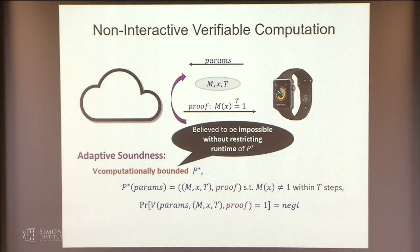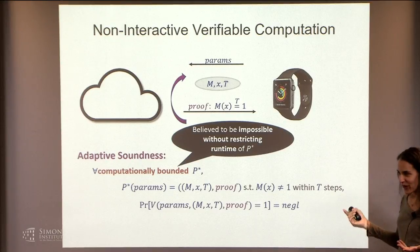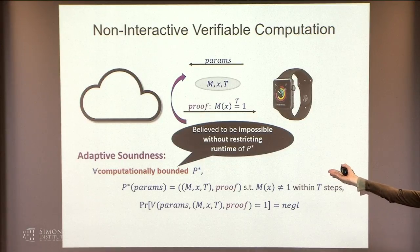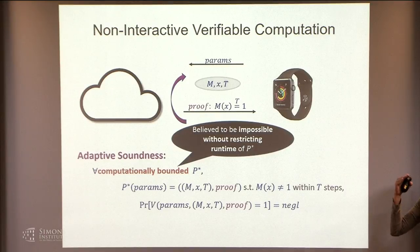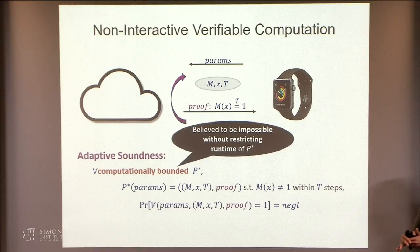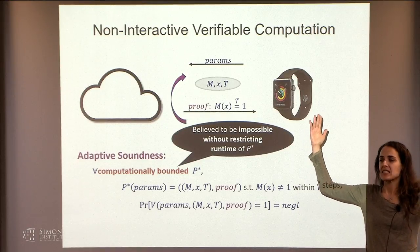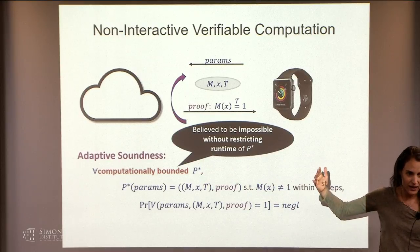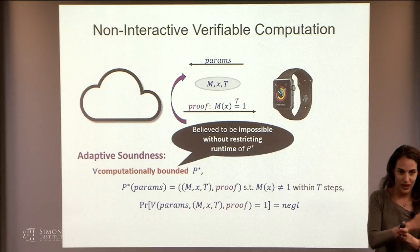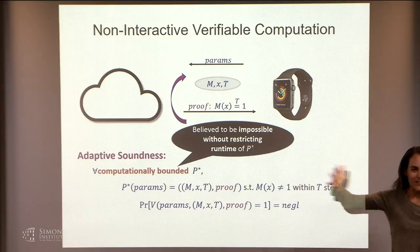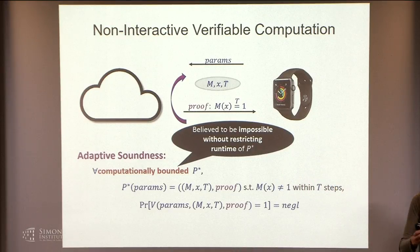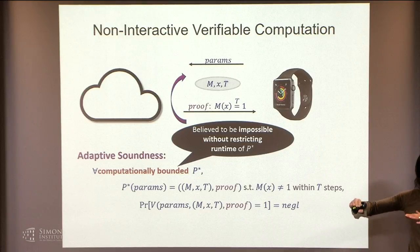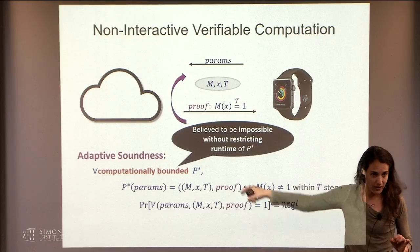If T can be large — even exponential — how can I restrict the cheating prover? That's why it's useful to think of computations in P or NP. But if you want larger computations, you can think of T as even two to the n, and assume the cheating prover also runs in at most time two to the n, then take an encryption scheme that can't be broken in that time. This is called complexity leveraging.